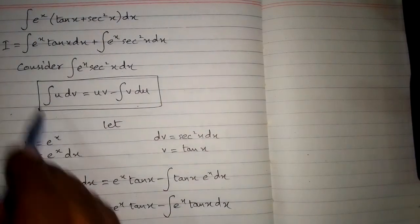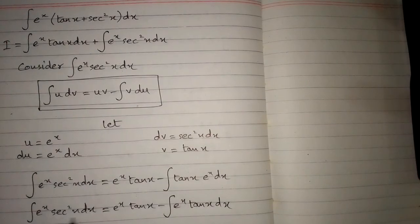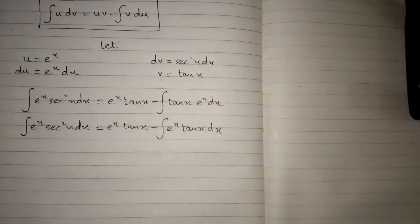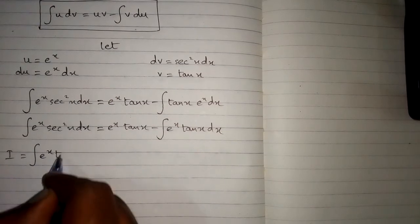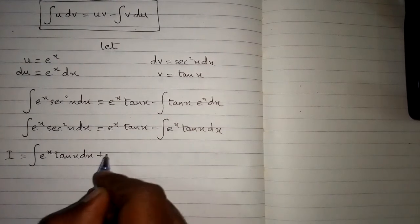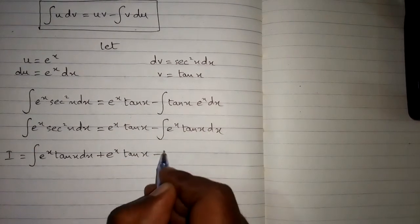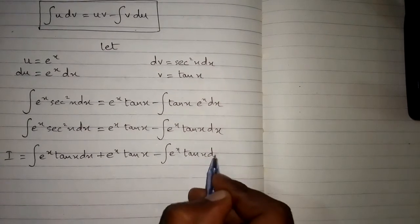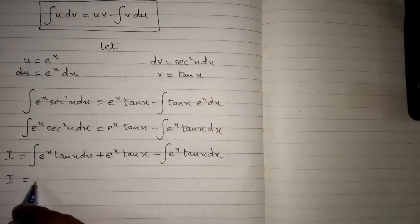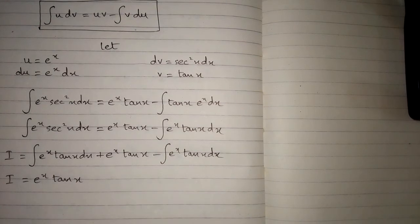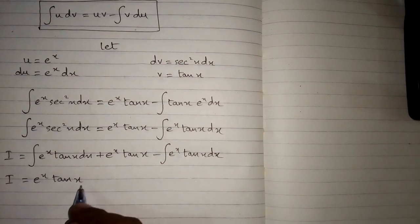We substitute this result back into the original expression. The two integrals of e to the power x tan x are the same and they cancel each other out, leaving us with e to the power x tan x. This is the answer to the question, and we add C, where C is the constant of integration.